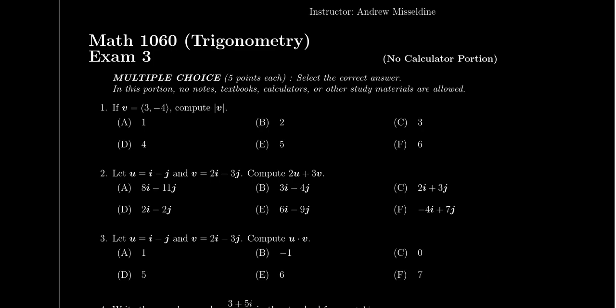The multiple-choice section is going to be predominantly vector-type questions, Chapter 9 material. Vector questions, with the exception of story problems, involve simple calculations. Question one will ask about vector magnitudes, vector direction, and vector components — can you compute the horizontal or vertical component? This could be given algebraically or geometrically. Good lectures to consult here are Lecture 28, which covered geometric vectors, and Lecture 30, which covered algebraic vectors.